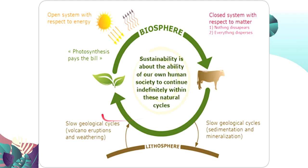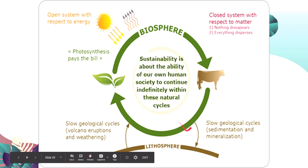The flow of energy in an ecosystem is a one-way linear process as seen in food chains and food webs. However, in terms of matter, the biosphere and all ecosystems are considered a closed system because on our planet, nothing disappears — everything disperses. Slow geological cycles such as sedimentation and mineralization are also involved in cycling of nutrients, while volcanic eruptions and weathering also contribute materials to an ecosystem.